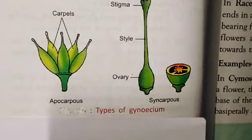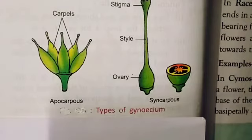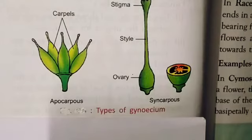Next is bicarpellary. In this condition, there are two carpels present. Where two carpels are present, that gynoecium is called bicarpellary. This condition you can see in the mustard flower, where two carpels are present.